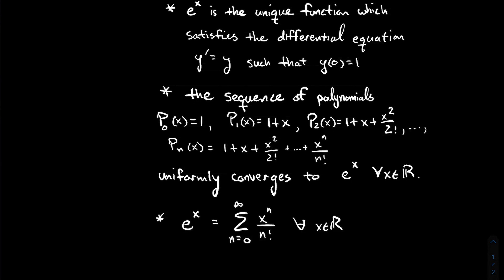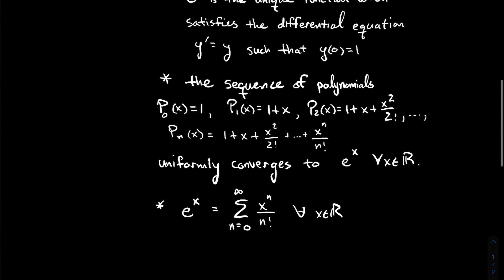Another way to say that, or what it implies, is that e to the x has this power series — it's the limit of adding up all the polynomials of that form. We write it as the series, and that series representation holds for all real inputs x.